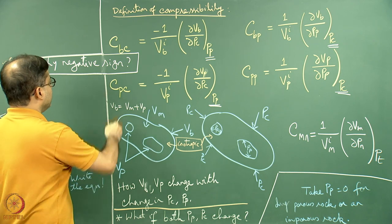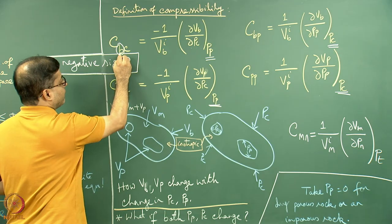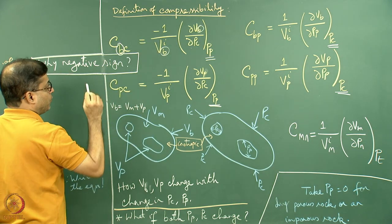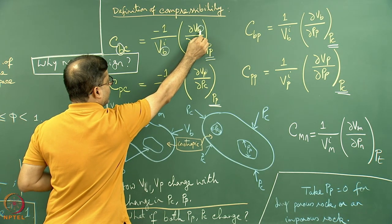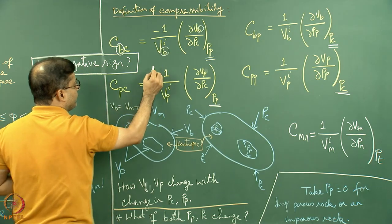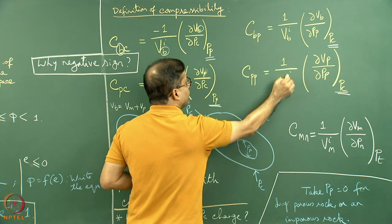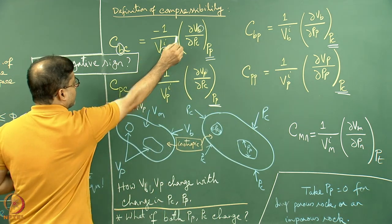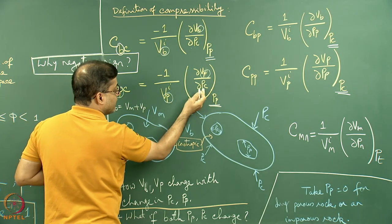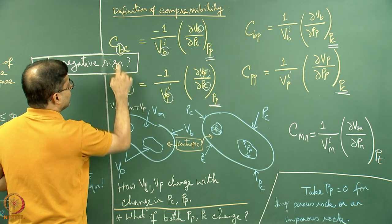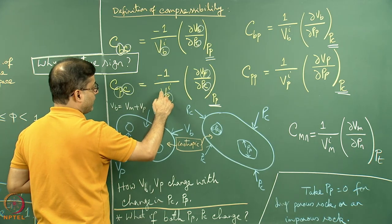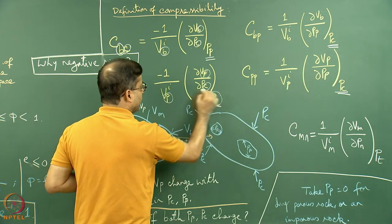Looking at Cbc: the first suffix b refers to Vb. Cbc is a compressibility factor which considers change in Vb with change in Pc, as a ratio, then per unit initial Vb — where the superscript i stands for the initial magnitude. For Cpc, similarly, we look at how Vb changes with change in Pc. The second suffix C indicates del Pc. Cpc equals minus 1 divided by Vip, times del Vp / del Pc at constant Pp.